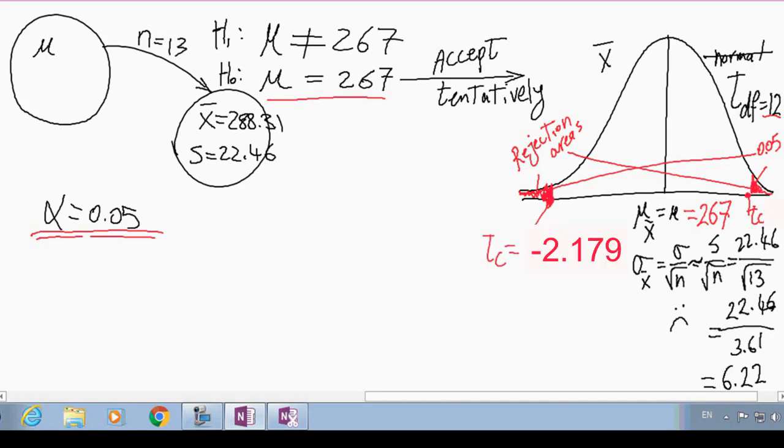Okay, so now if our observation ends up to be in these rejection areas, then we will reject the null. Otherwise, we have to suspend our judgment. Okay, so let's find out what is our observation.